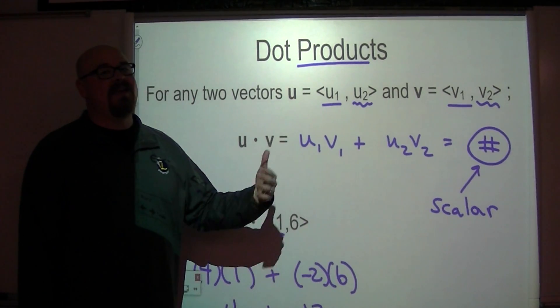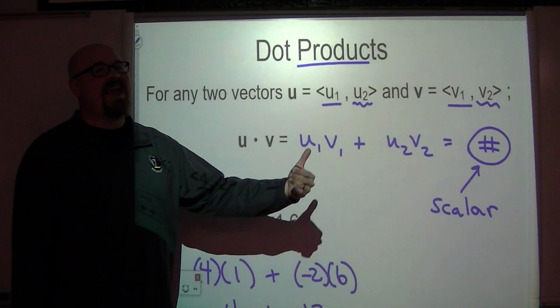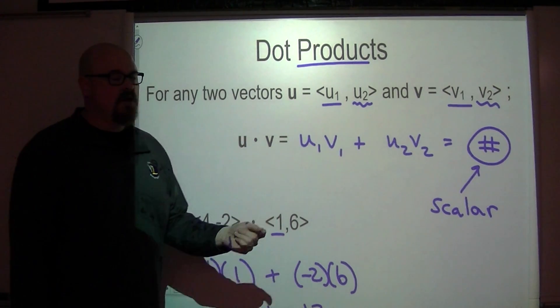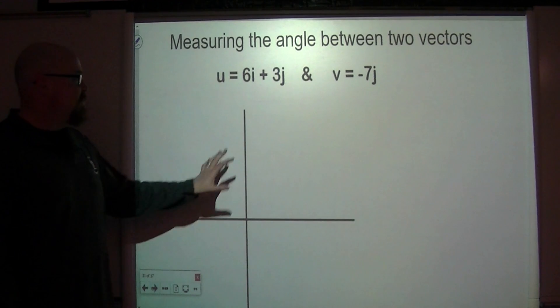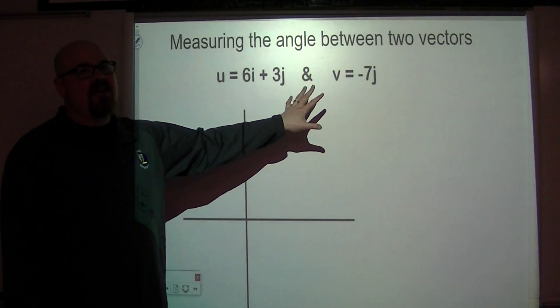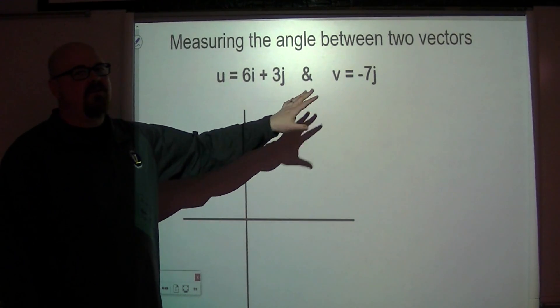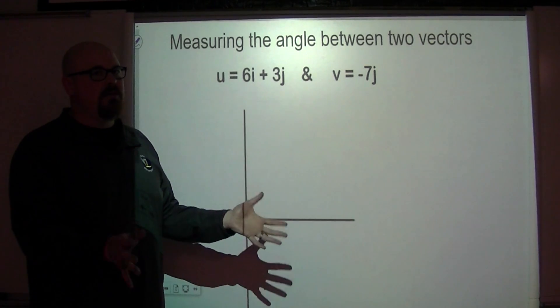Dot products can be used to find the angle between two vectors. It goes a little bit quicker. But you should be able to find the angle between these two vectors without dot products. You should be able to do that.